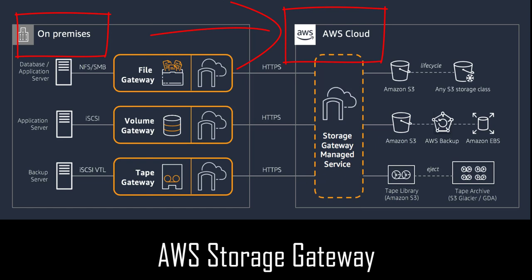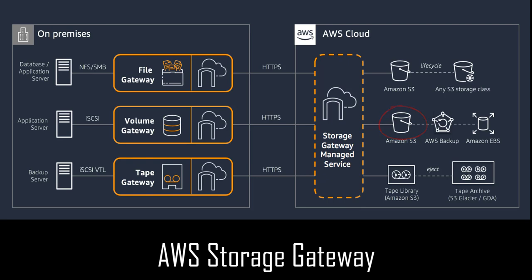If you recall from the storage lesson, the different kinds of storage services include block storage, which we call EBS, and object storage, S3. So if you'd like to fully migrate your on-premise infrastructure's storage to AWS storage, you might want to use a Storage Gateway.